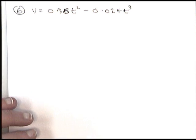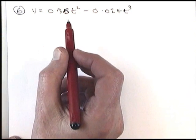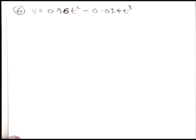This is the AdMass paper from June 2008, question 6. A speedboat accelerates from rest so that at t seconds after starting, its velocity in meters per second is given by the formula v equals 0.36t squared minus 0.024t cubed.